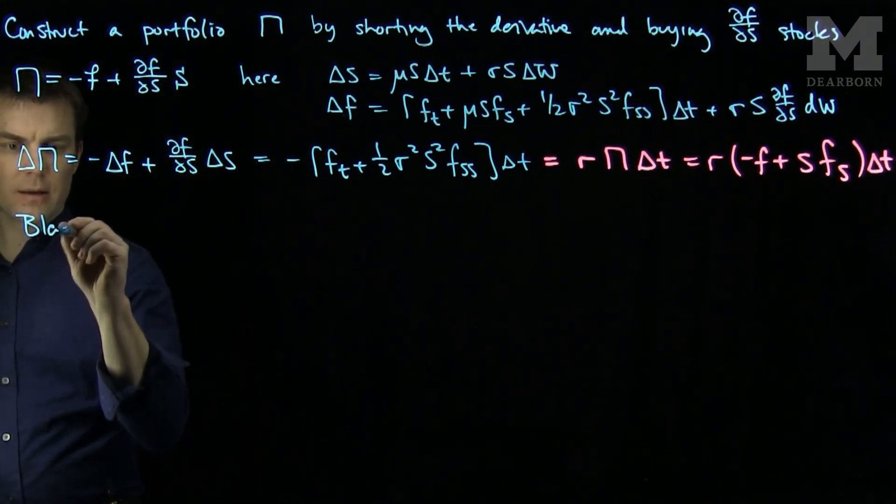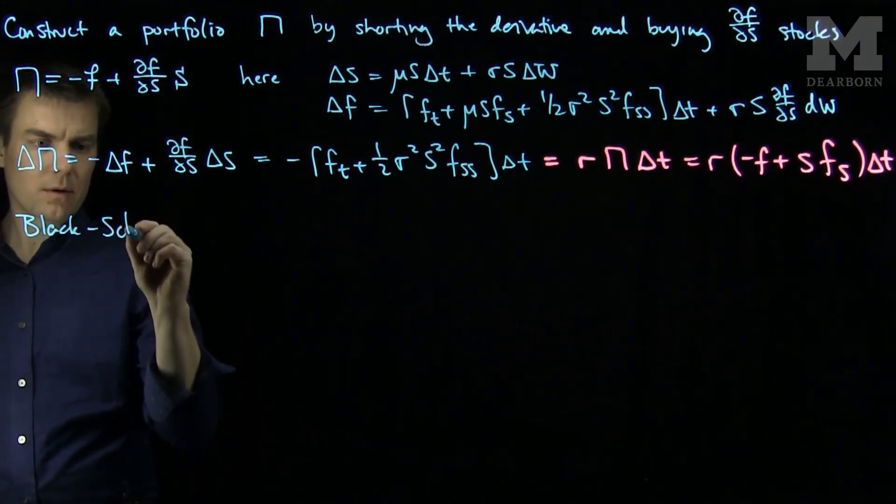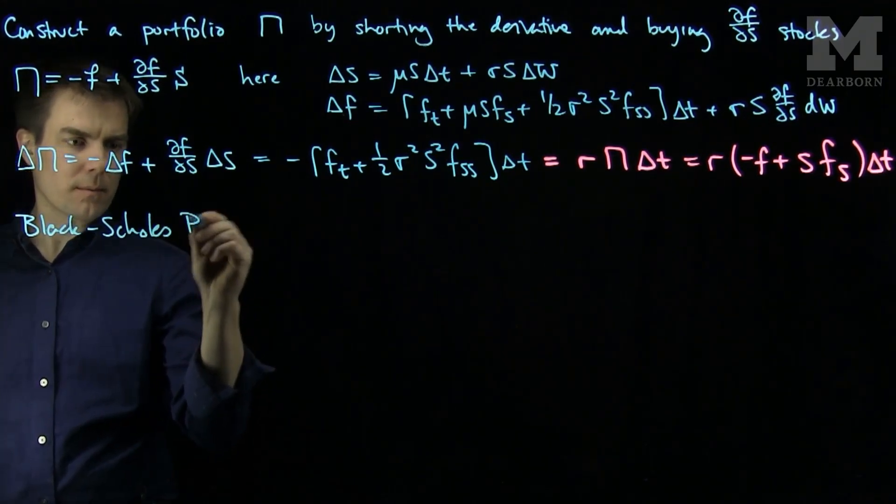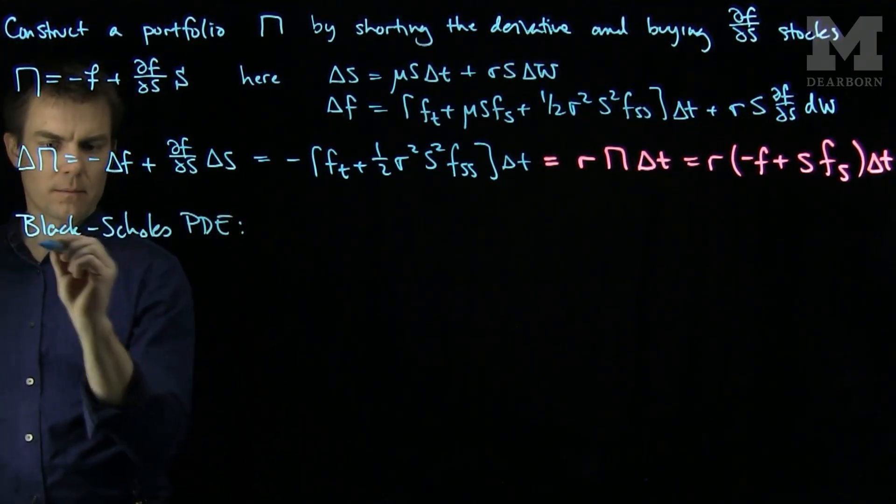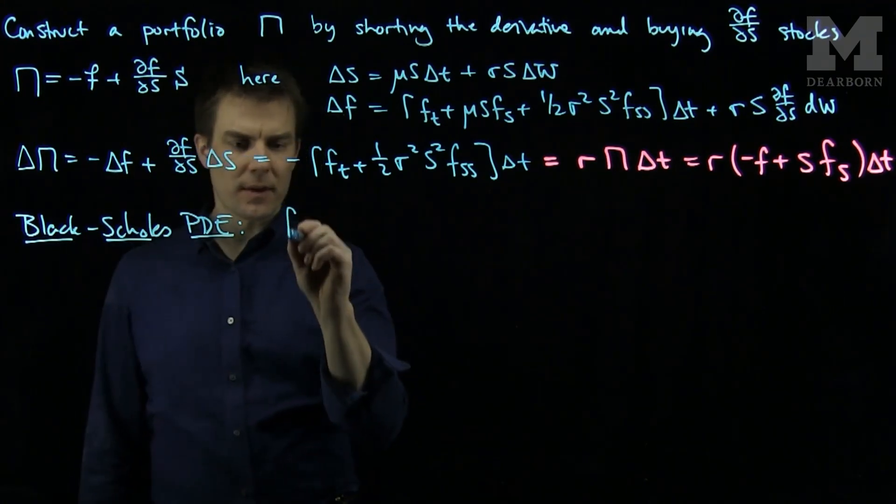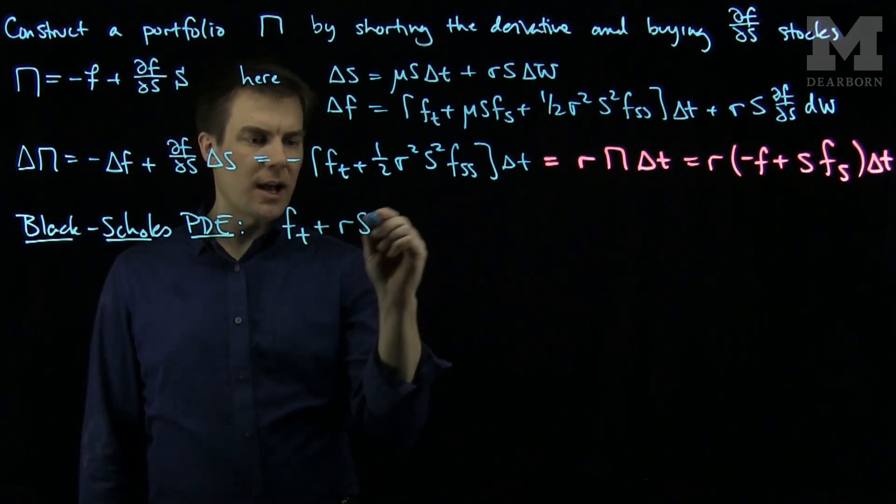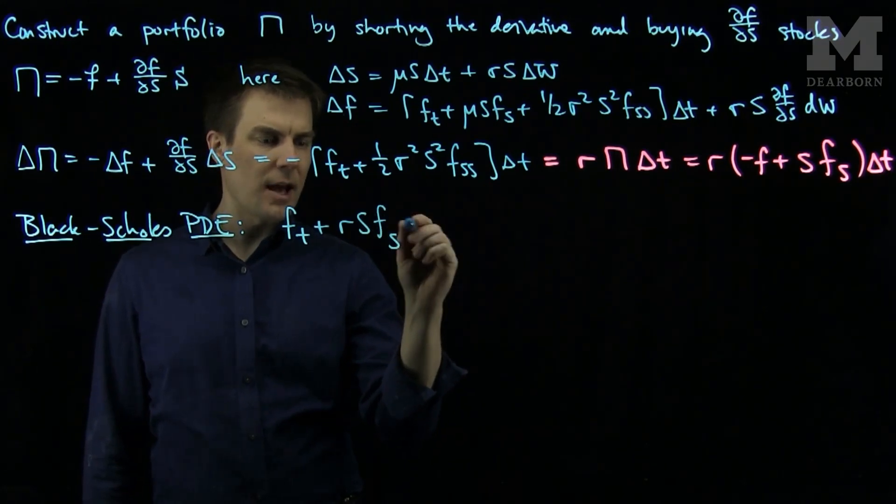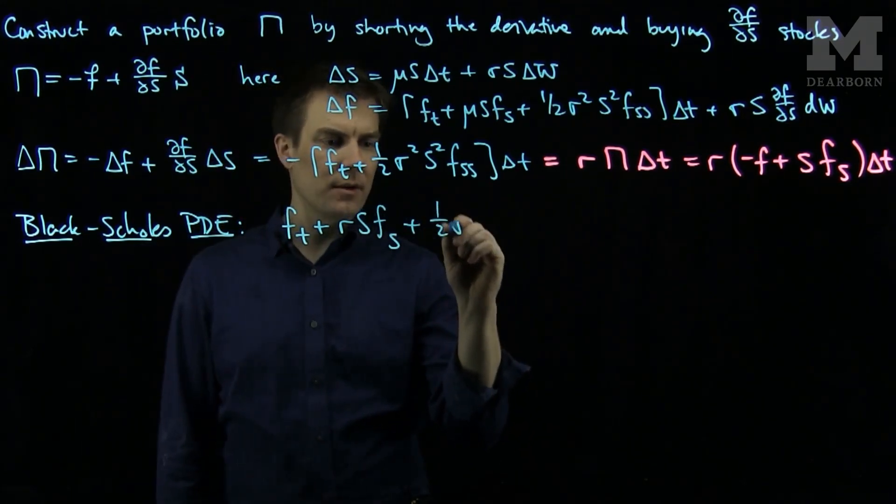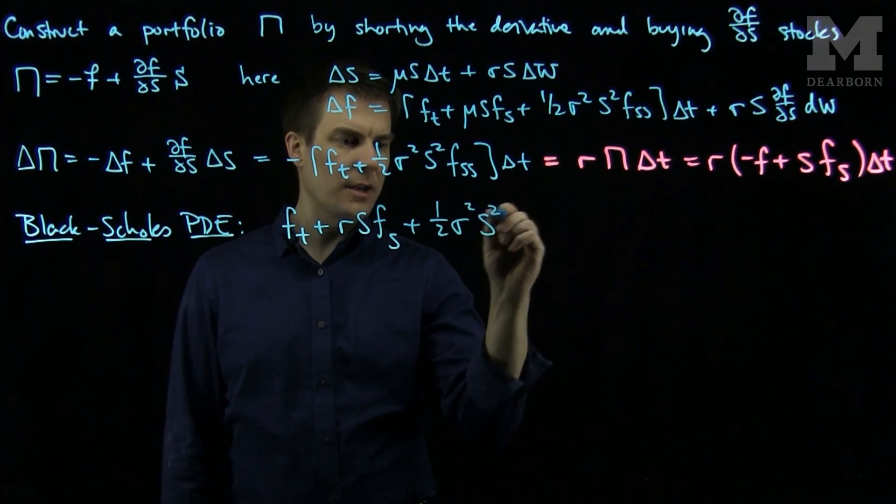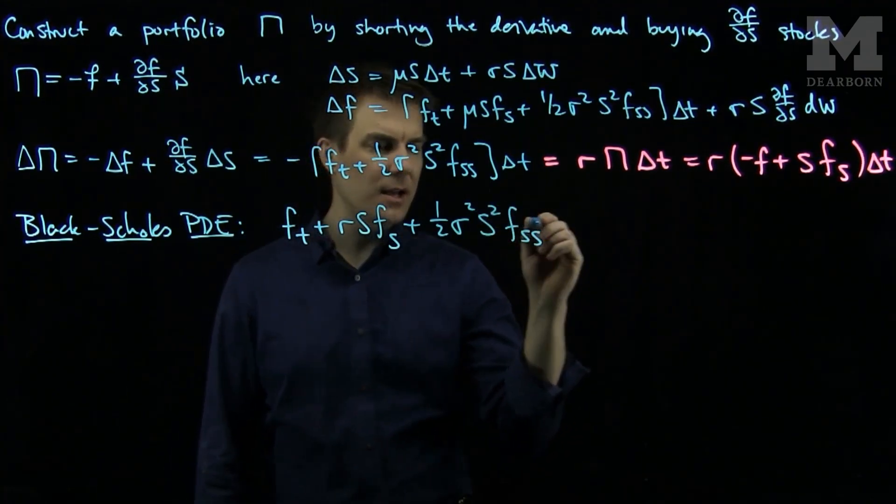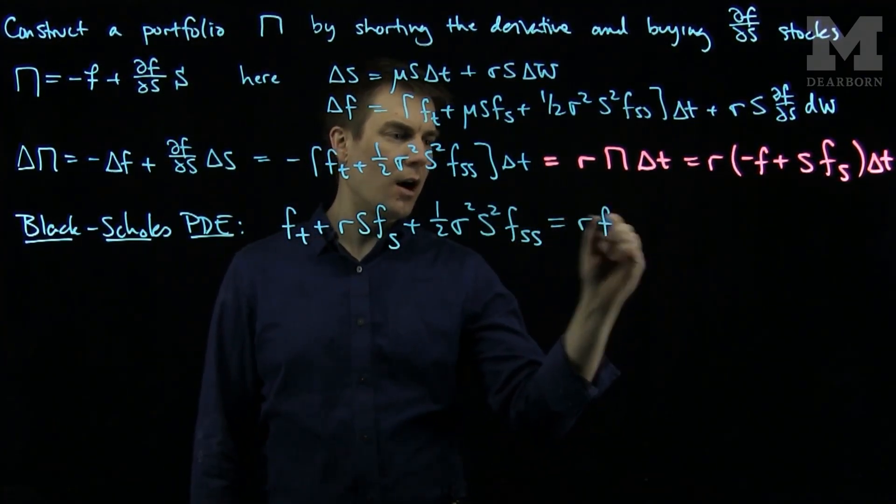So the Black-Scholes PDE is ft plus rsfs plus one-half σ² s² fss is equal to rf.